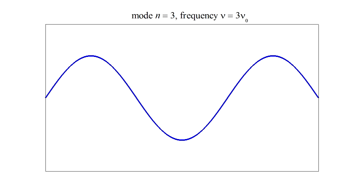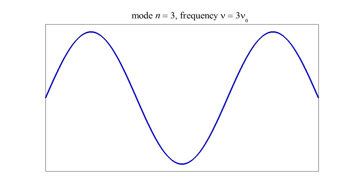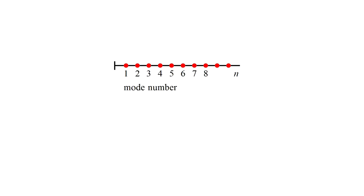We call each of these vibrations a mode of the string and we index them by the number of bumps in the string shape. We can draw a number line and place red dots at the integers n equals one, two, three, and so on, and each dot will then represent a mode.